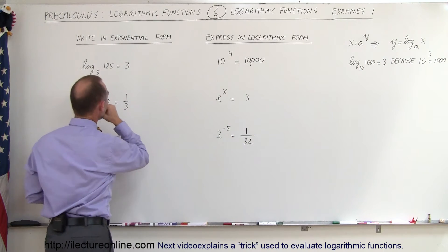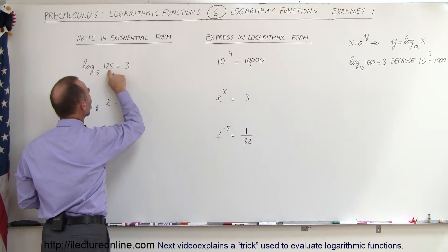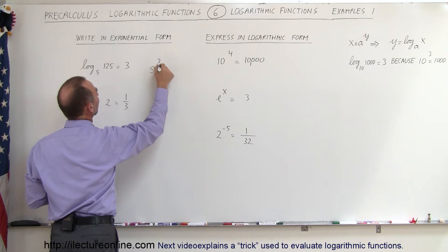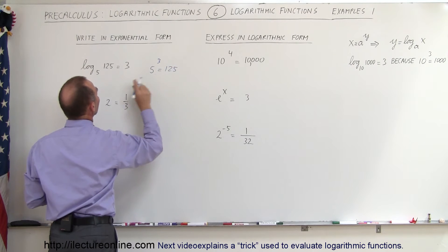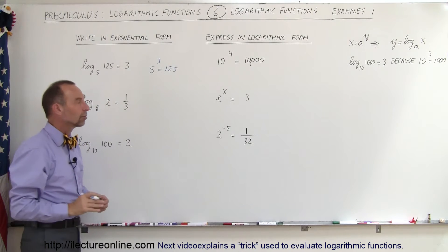So when we come over here we can say that we take the base raised to the third power and that should equal 125. So here we can write the base raised to the third power equals 125, and that is taking the logarithmic form and writing it into exponential form.